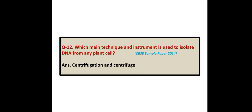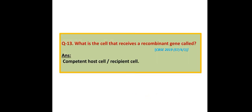Which main technique and instrument is used to isolate DNA from any plant cell? Answer: The technique is centrifugation and the instrument is a centrifuge. What is the cell that receives a recombinant gene called? Answer: Competent host cell, or recipient cell.